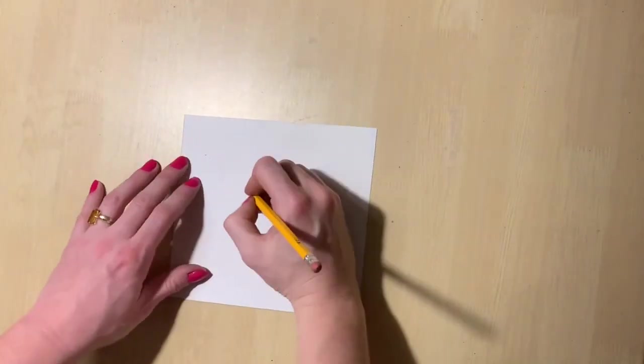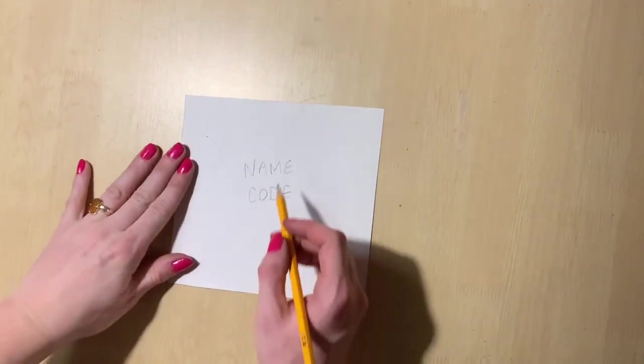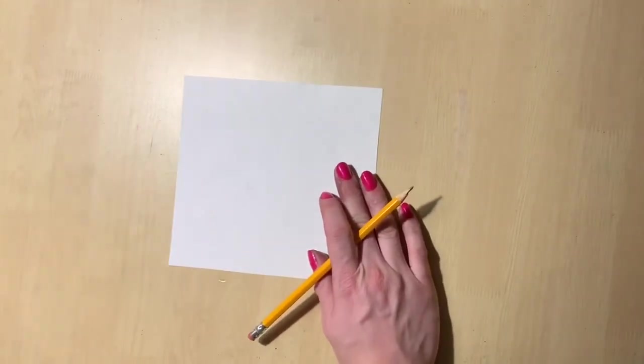Now that we have practiced drawing these three desserts, let's do it for real. Take the white square of paper and write your name and code on the back. As usual, you can add decoration before you flip it if you want.